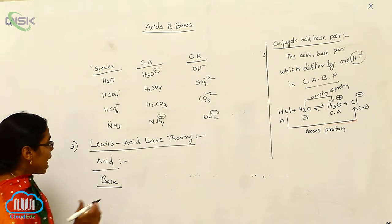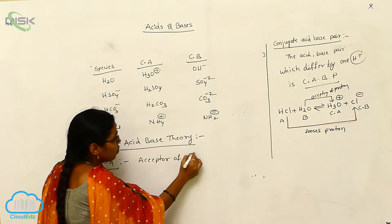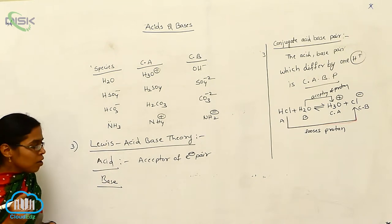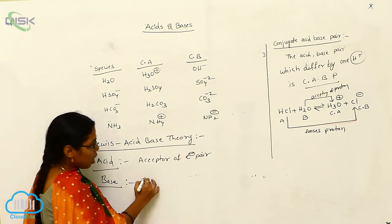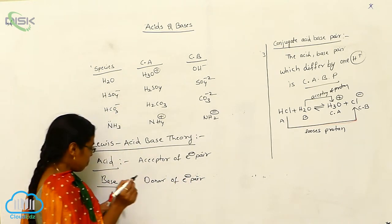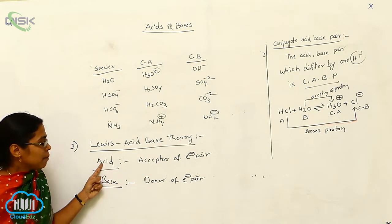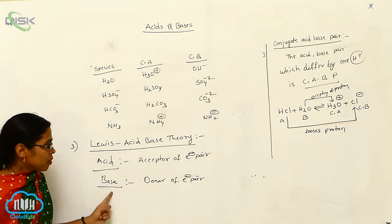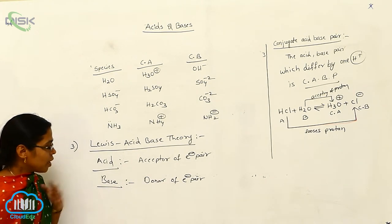Lewis acid is the acceptor of an electron pair — that is called a Lewis acid. Lewis base is the donor of an electron pair — that group which can donate an electron pair is called a Lewis base.